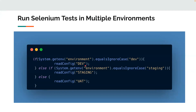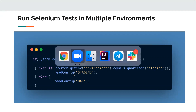But this approach is really error-prone. There are plenty of chances to make mistakes. I've kept a very simple example here, but in real time you might have to manage a lot of variables and a lot of configuration, so this can be really hard to manage. So how can we manage this without even writing a single line of code? That's what we're going to see today.